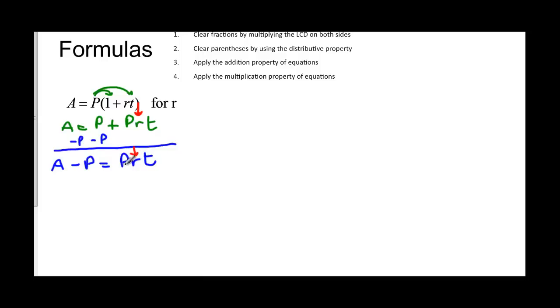Well now I'm looking at this problem and I want to get to that r again. But I've got this P and this T that are being multiplied by it. And how do you get rid of something that's being multiplied by your variable? You divide it. So I need to divide this side by PT and I have to divide the whole other side by PT.